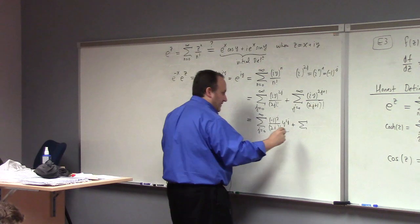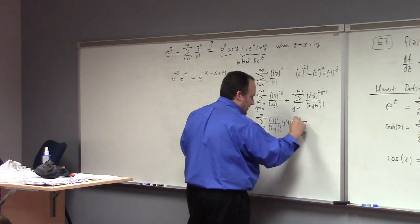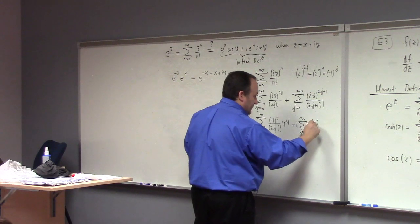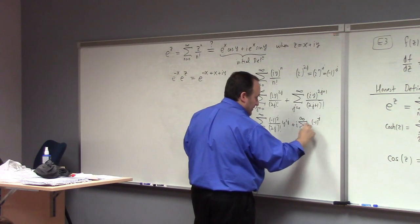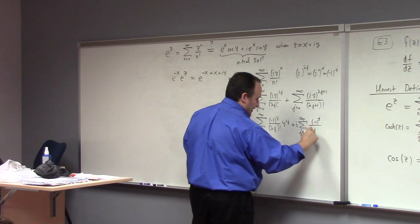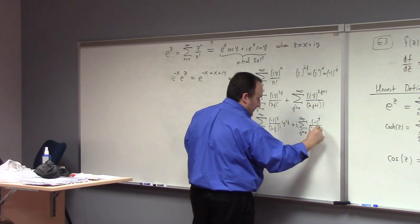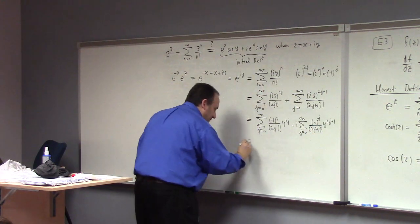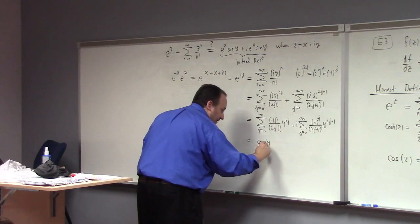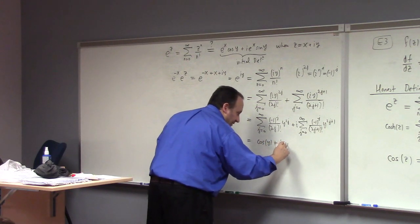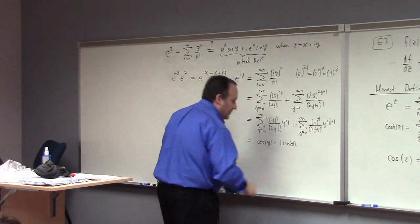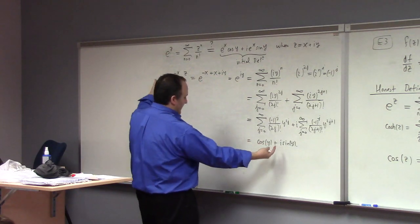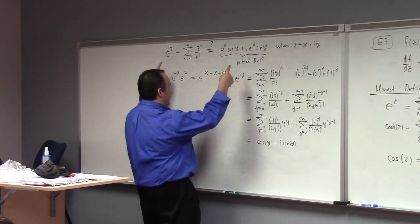And so this simplifies straight up to the sum j equals 0 to infinity of minus 1 to the j divided by (2j) factorial times y to the 2j, plus the sum j equals 0 to infinity — there's an i out here — minus 1 to the j divided by (2j+1) factorial times y to the 2j+1. Lo and behold, cosine of y plus i sine of y. And then from this identity, we get that identity.